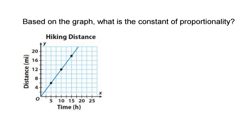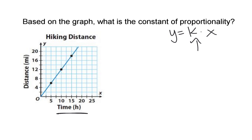The next question says: based on the graph, what is the constant of proportionality? Remember, using y equals k times x, that k value is our constant of proportionality — the number we multiply the x value by to get to the y value. This graph represents hiking distance: the x value is time in hours, the y value is distance in miles. The best approach is to inspect the points given on the graph in the form of a table.